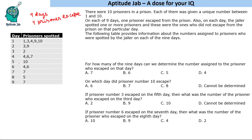Now if you see the last day, prisoner number 7 remained. So 7 did not escape — all others escaped. Prisoner 7 could not escape because 7 was spotted on the 9th day.